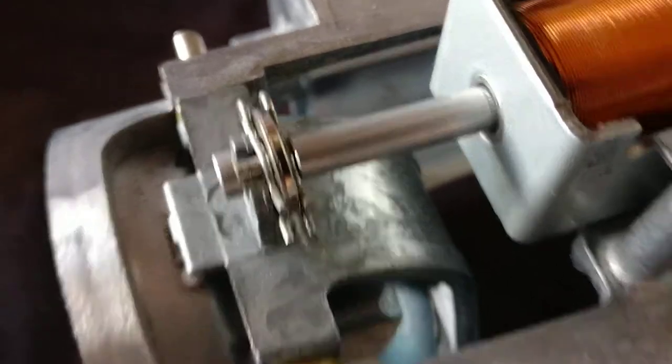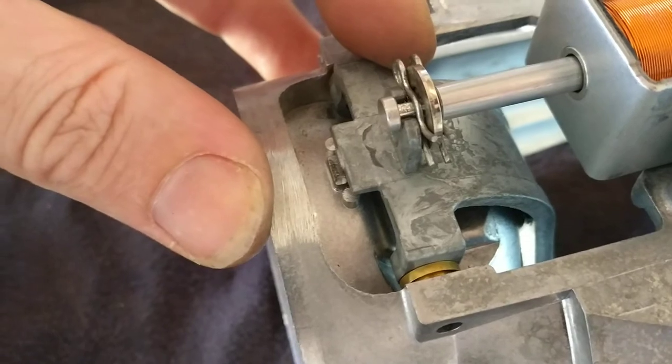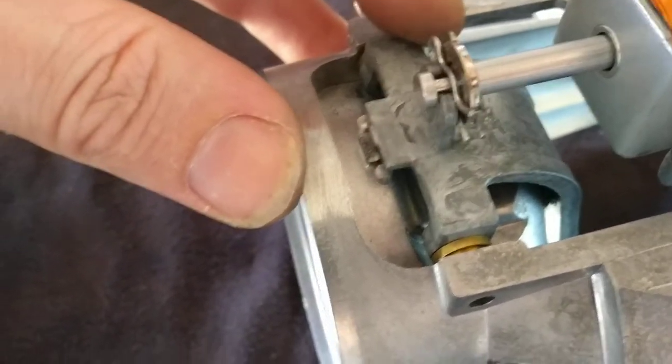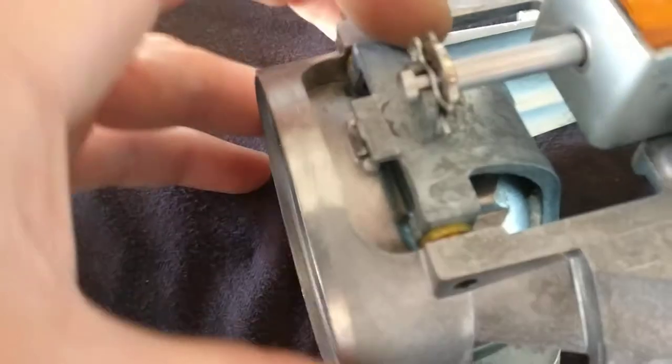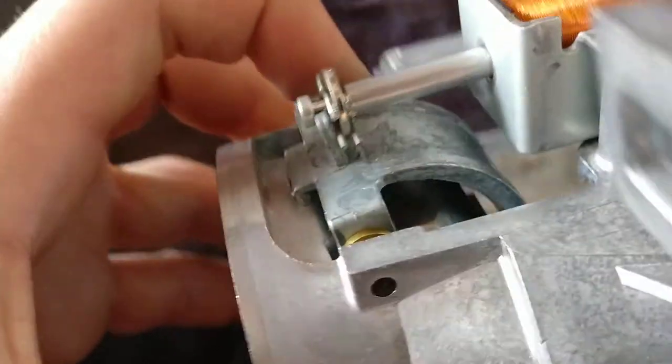And then you've got a teeny tiny bit of play there left over. I could perhaps shim that out a little bit, but I don't want to because when it's at full throw, the bottom of the body clip will push against it slightly anyway.